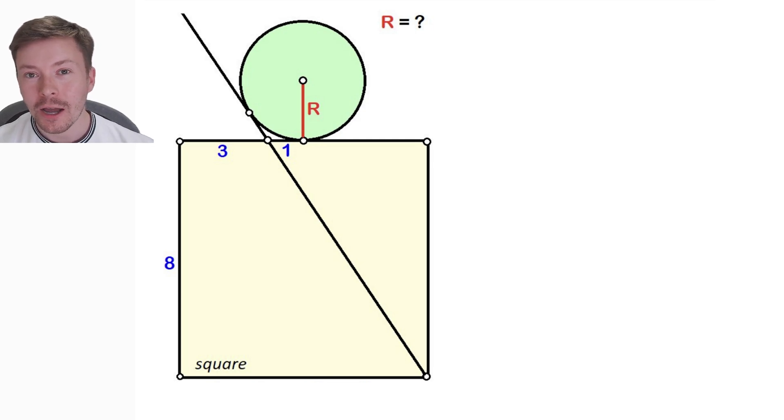Hi and welcome back to my channel. We've got this problem here all about finding the radius of this circle where the circle is on top of a square and it's got this line going from the bottom right hand corner of the square and coming up, making a tangent to that circle there.